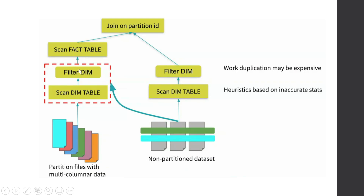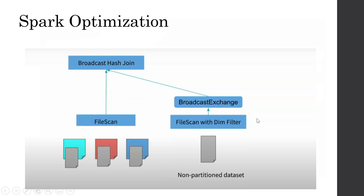An even better way is to do a broadcast hash join, and this is what Spark would use if the dimension table is very small. What Spark will do is filter and scan the dimension table, and then do a broadcast hash join — meaning the entire small data set will be broadcasted to each of the executor nodes so that the data is available locally to each executor. They can then operate on that data to avoid shuffles. This is even more efficient than the subquery method, and this is what Spark tries to do when we talk about dynamic partition pruning.